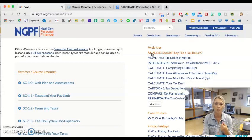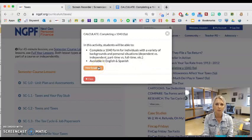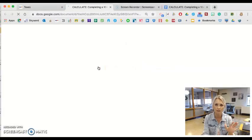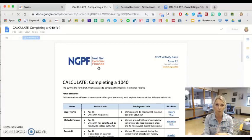Another great one to do prior to this activity is should they file a tax return, which looks at whether a person has to legally file a tax return and if they should file to get a refund. Then finally, I end my tax unit with this completing a 1040, which is a popular and great activity because they're going to have multiple characters, five, and they're going to complete a tax return or a 1040 for those characters.